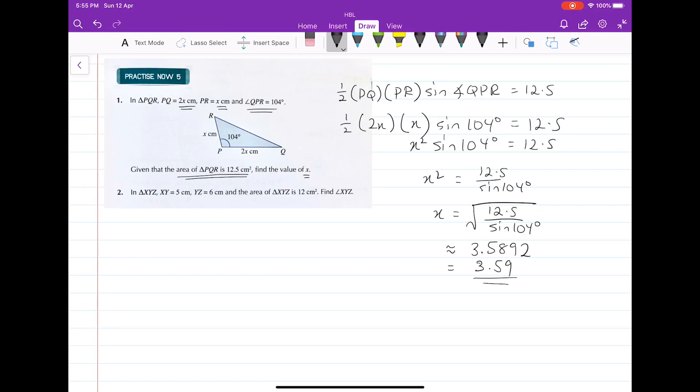Let's now consider the second question in practice 5. We have triangle XYZ, with XY being 5 centimeters, YZ equals 6 centimeters, and the area of XYZ given as 12 cm squared. We're supposed to find the angle XYZ. As always, one of the best things that you can do is to sketch out a diagram.